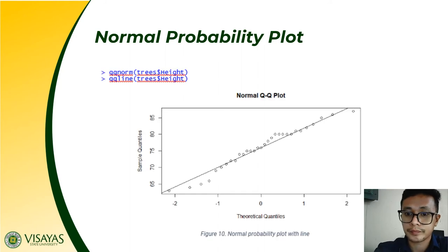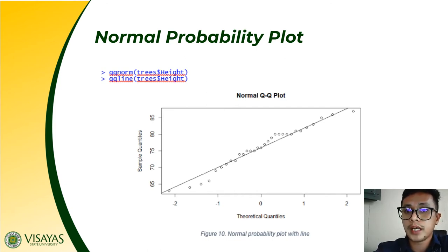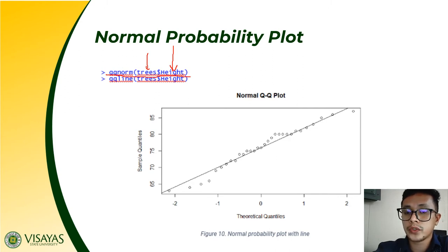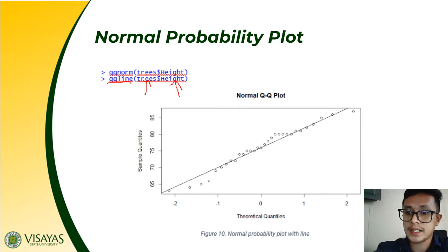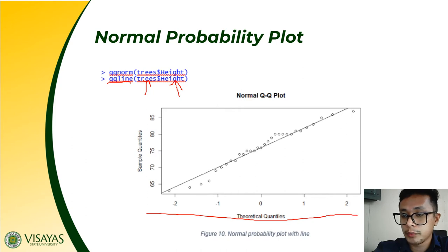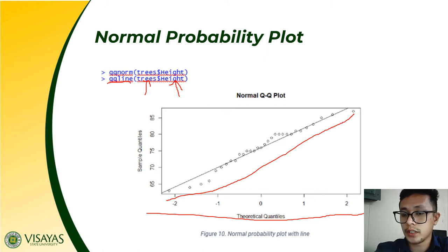For example, we create a normal probability plot using qqnorm with the trees dataset and height variable. Then, to determine which data are not from a normal distribution, we add a reference line using the qqline function with the dataset and variable. When you press enter, the normal probability plot will display the reference line, making it easier to determine which data fall on the normal distribution.